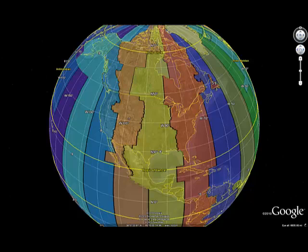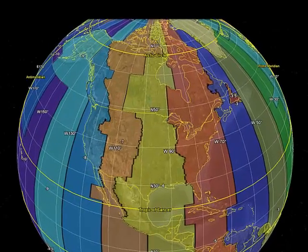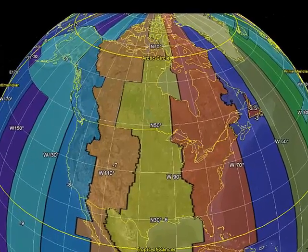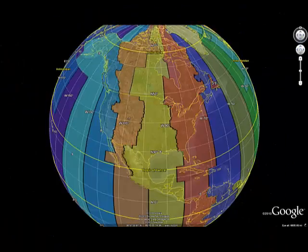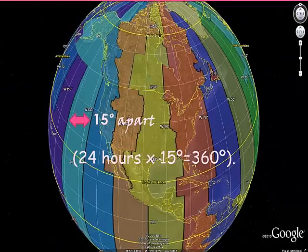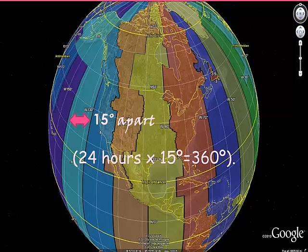Time zones are vertical lines that run from the North Pole to the South Pole. Each vertical line is spaced 15 degrees apart.